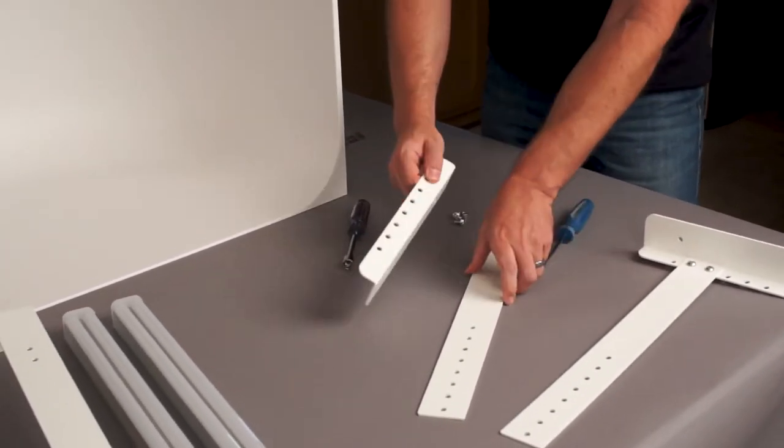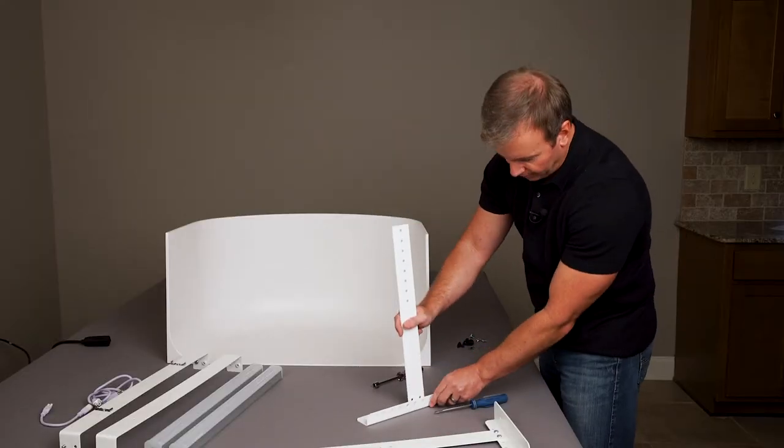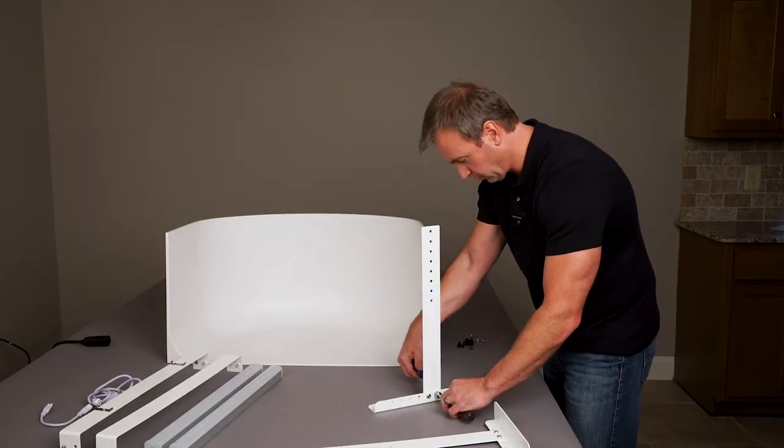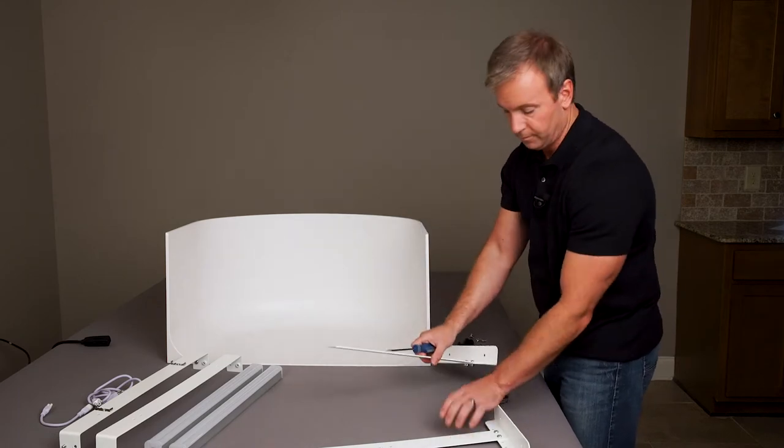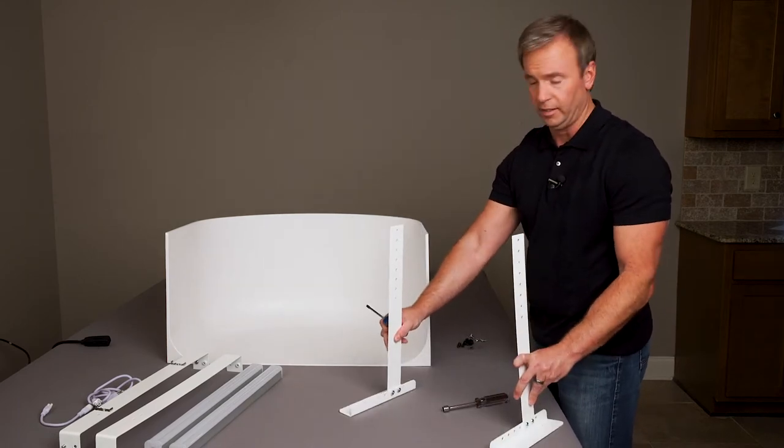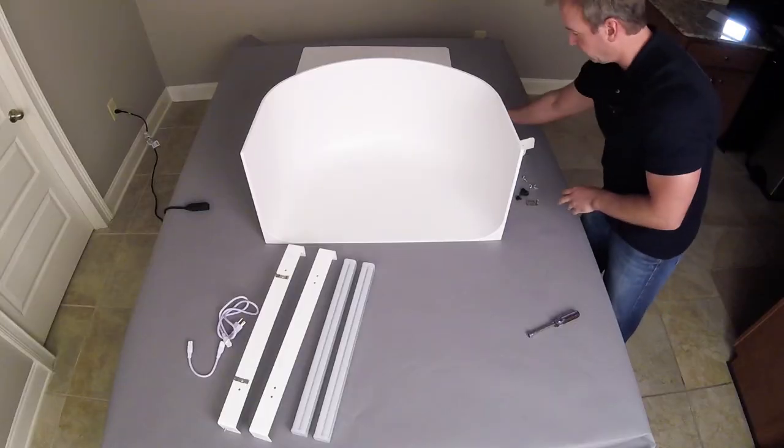Alright, so that's the left leg, and now we've got the right leg. So, the leg goes on the outside of the flange. Alright, so you've got your legs. Left leg, right leg. Now, we're going to do the crossbars. We're going to put these back here for a minute.